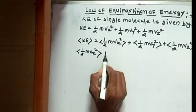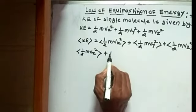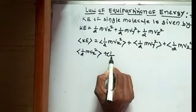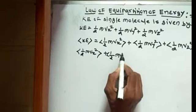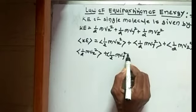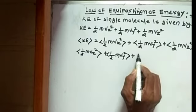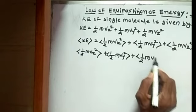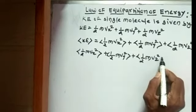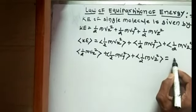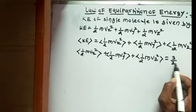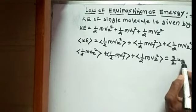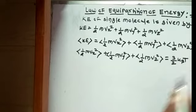Which is equal to 3 by 2 kBT. Where kB is the Boltzmann constant.